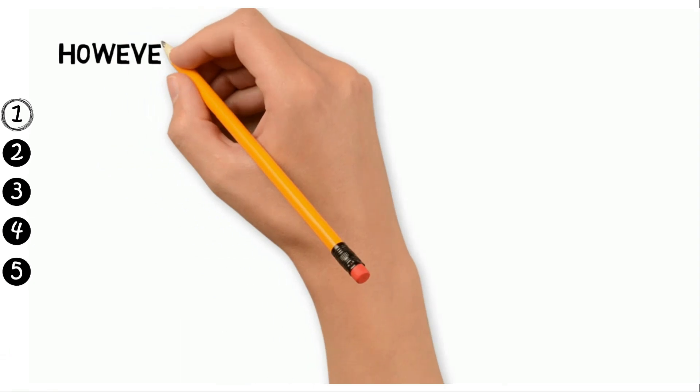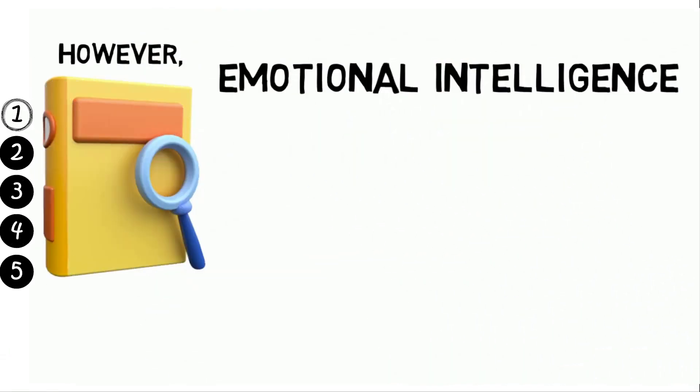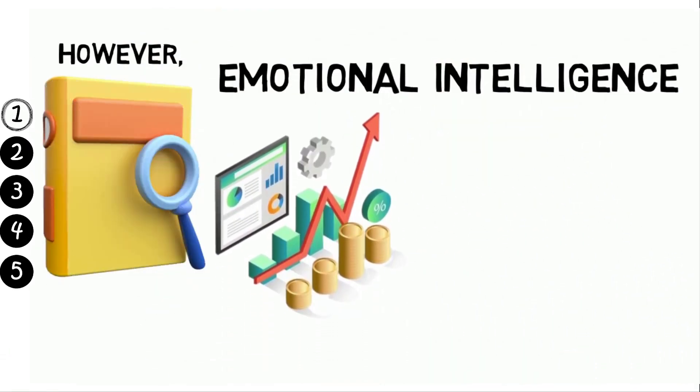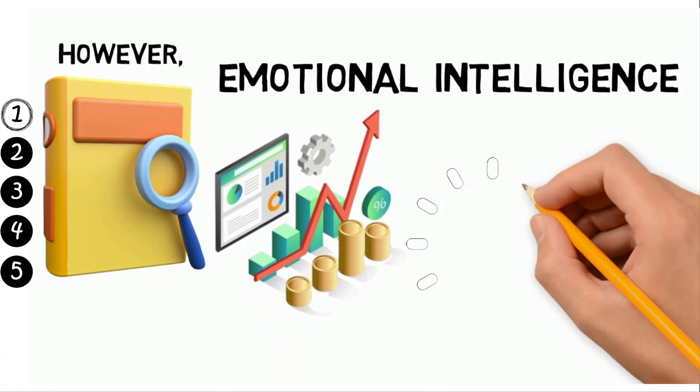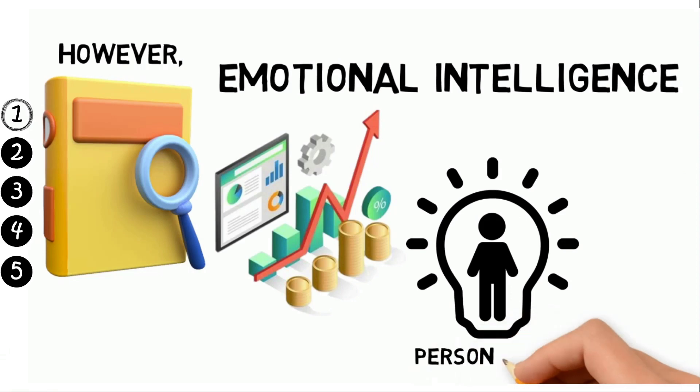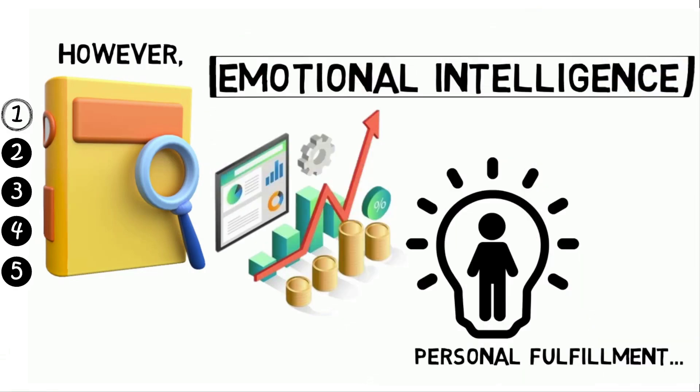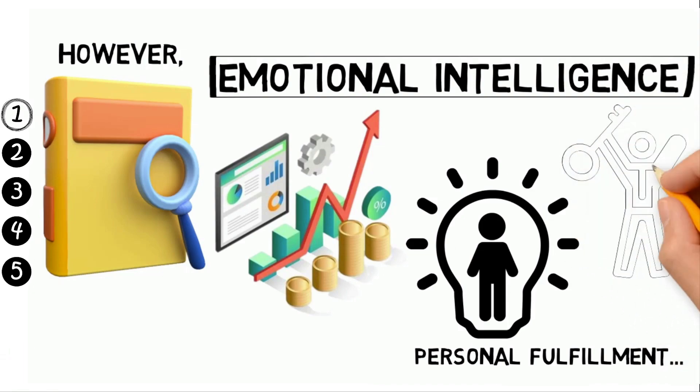However, Robbins goes even further, arguing that emotional intelligence is not just about making money or being successful in business. He argues that it is essential for achieving any kind of personal fulfillment. In other words, Robbins believes that emotional intelligence is the key to unlocking unlimited power.